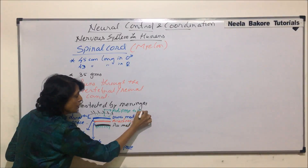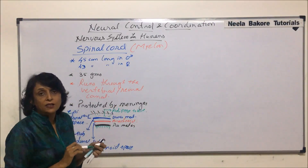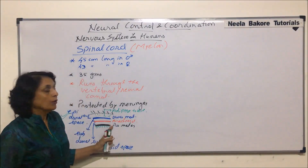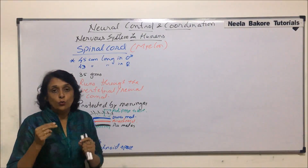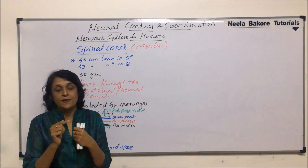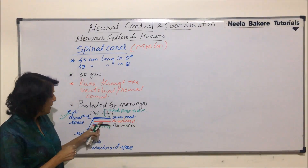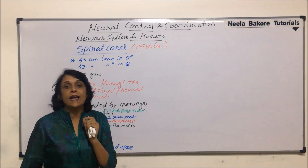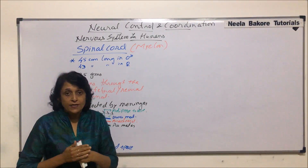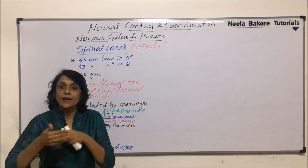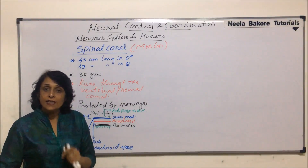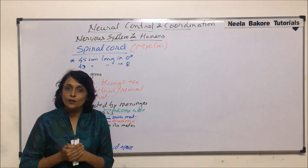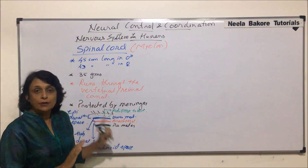The epidural space is filled with adipose tissue. This is an additional layer which is present in the spinal cord but not around the brain — that is one difference. There is also subdural space and subarachnoid space. The subarachnoid space is filled with cerebrospinal fluid, same as in the brain. The epidural space is between the bone of the vertebra and the dura mater. The other protection is the bone of the vertebral column.